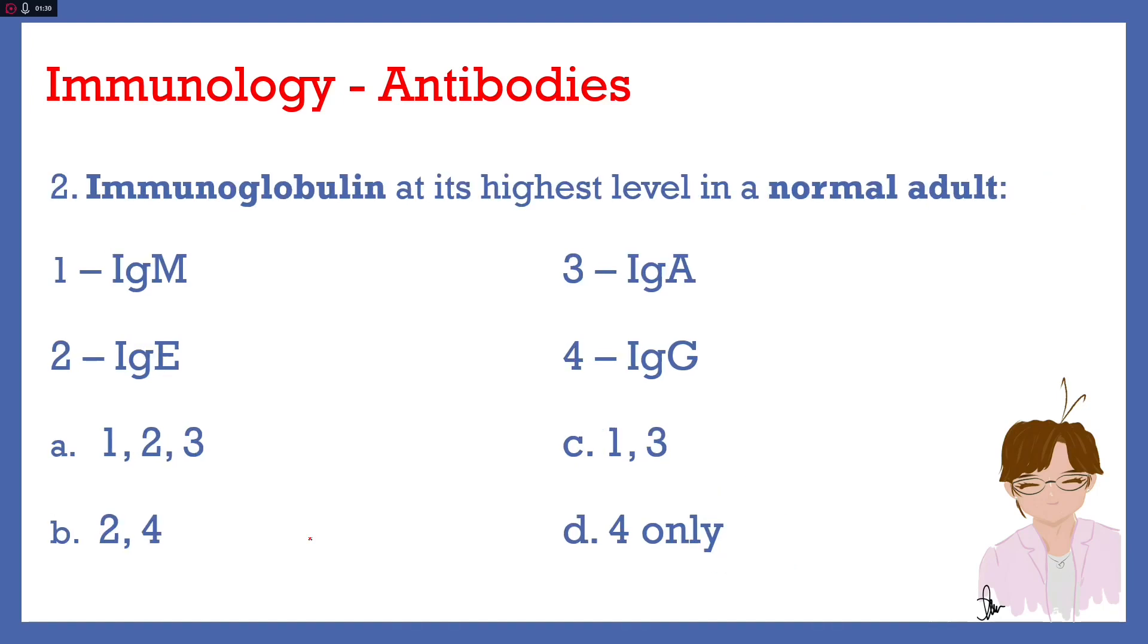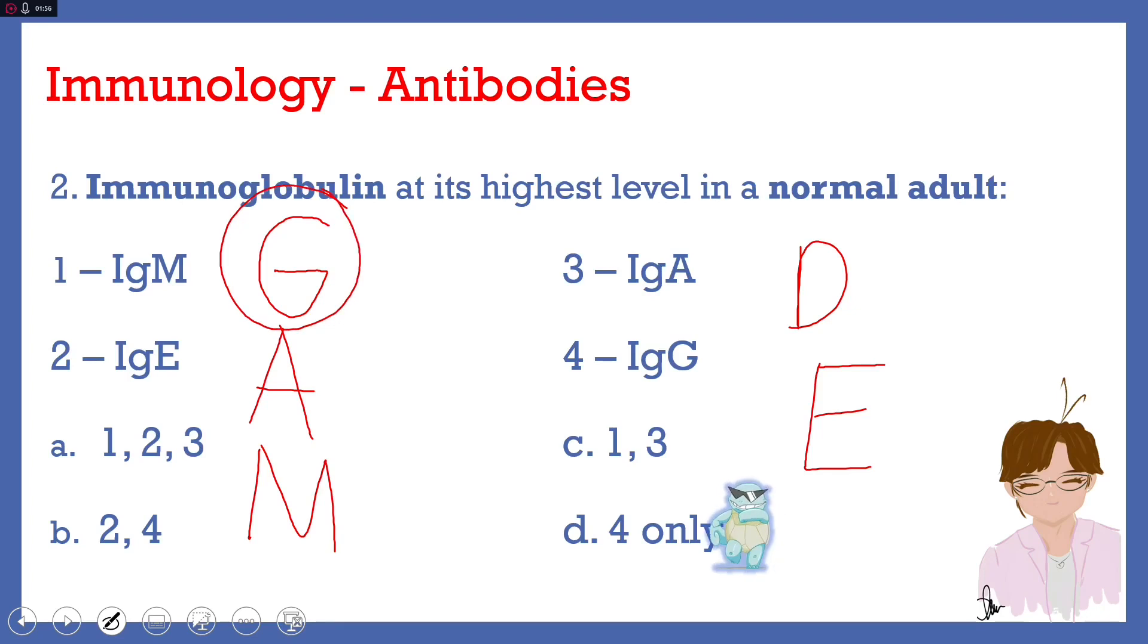Number 2. Immunoglobulin at its highest level in a normal adult. We have the same choices. And so the answer here is still letter D, IgG. You remember the mnemonic that we can use here is IgG, IgA, IgM, IgD, IgE or GAMDE. Which means IgG has the highest concentration in our blood followed by A, M, D and the least concentrated immunoglobulin in our blood will be IgE.